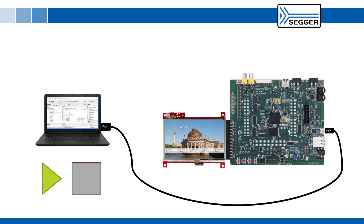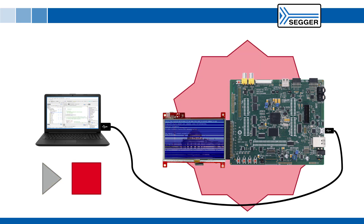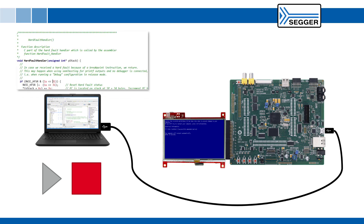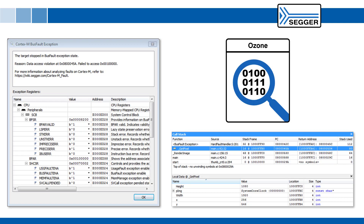During development of an embedded application, firmware crashes can and probably will happen. Usually, the execution suddenly ends up in a hard fault handler. This is where SEGGER's Ozone debugger comes in. On the Cortex-M architecture, Ozone helps users to quickly analyze and find software bugs that cause CPU faults.